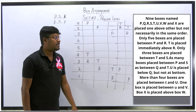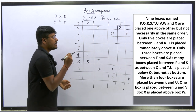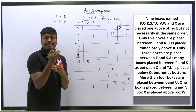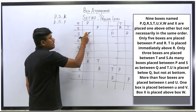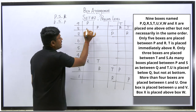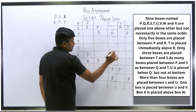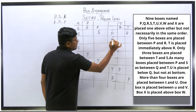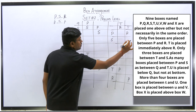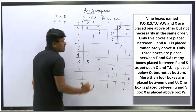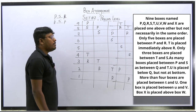Next: only three boxes are placed between T and S. In each diagram, counting three boxes from T gives us the position of S. So in all diagrams: one, two, three from T — that position is S. We fix S consistently across all possible arrangements.